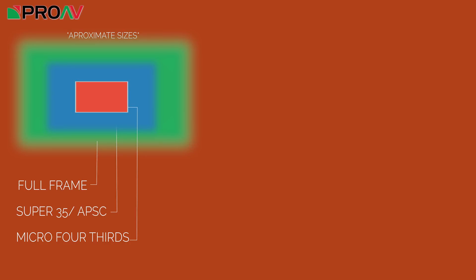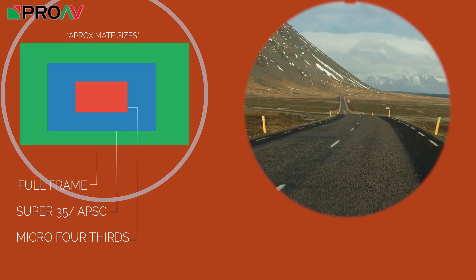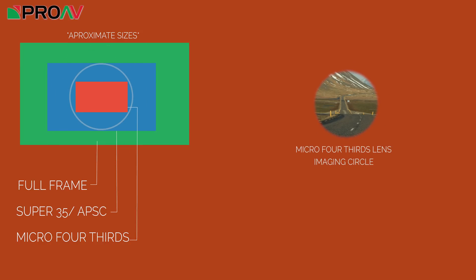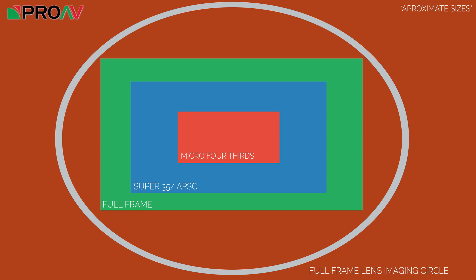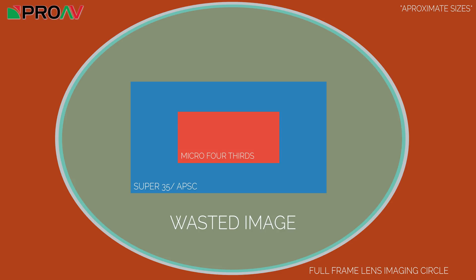On the left here we have sensor sizes: full frame, then super 35, and then micro four thirds. On the right we have a 50mm lens projecting an image. It can project all of that image to cover the full frame sensor, or a smaller section to cover a smaller sensor. So all you have to do is make sure your lens is covering the size of your sensor. If you put a micro four thirds lens on a super 35mm camera, you'll have a huge black vignette. But with a full frame lens, you'll get exactly the same results as a lens designed for super 35mm, because all the rest of the image is just being thrown away.